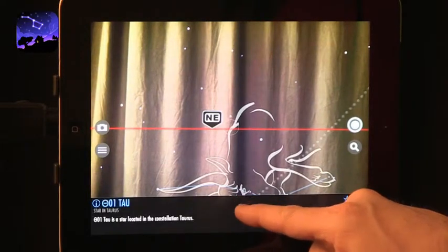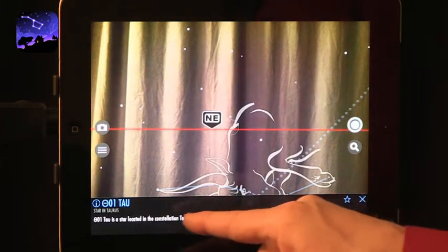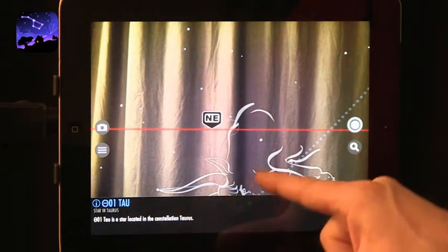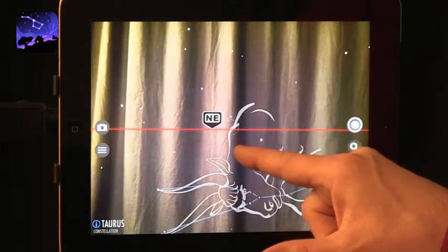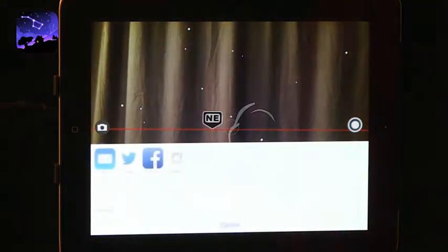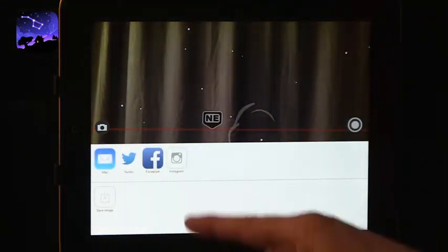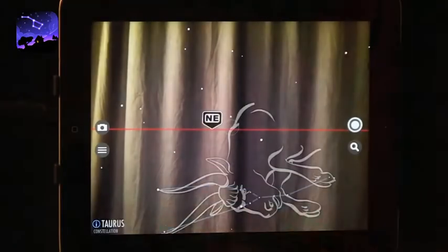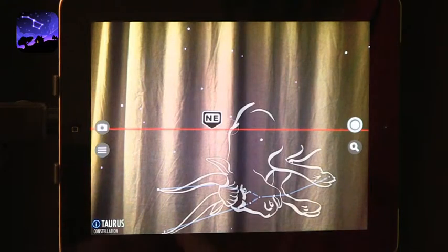But you can see that if I click on a star, I immediately get an identification. This is a tau. And it is a star in the Taurus constellation. And you can explore all of those stars a little bit further. You can also take a picture of the stars as you see them in that moment and then share them with others through your iPad. So this is a way to use what's going on outside.